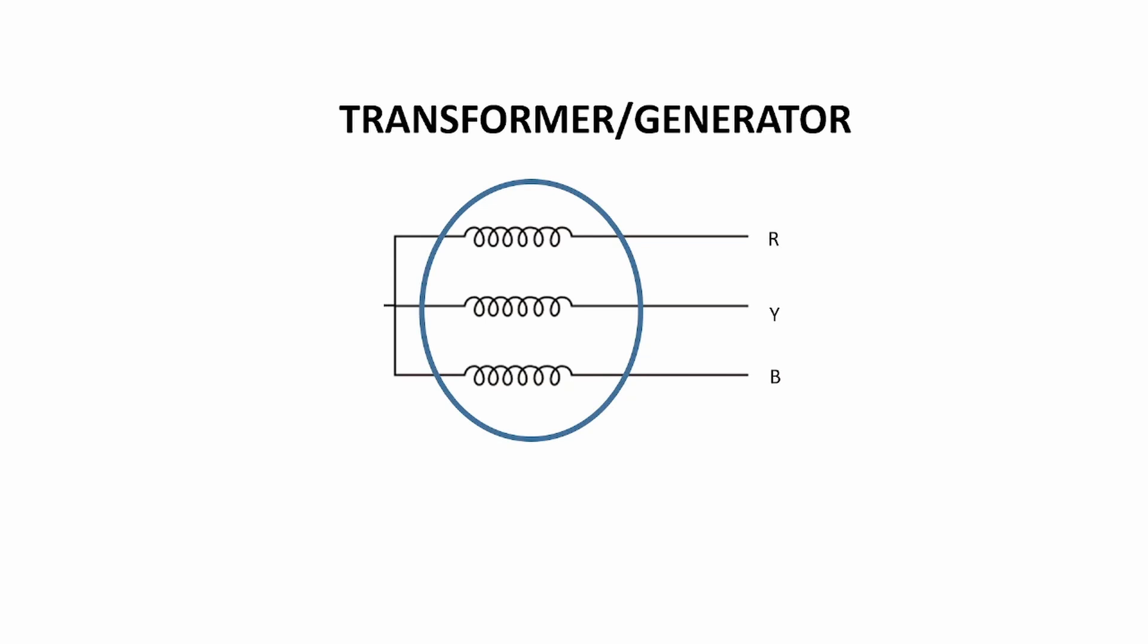and B phase. At another end is the neutral, also known as star point. If we directly ground this neutral to earth, it's called solid grounding. In this case, when a phase to earth fault occurs in the system,